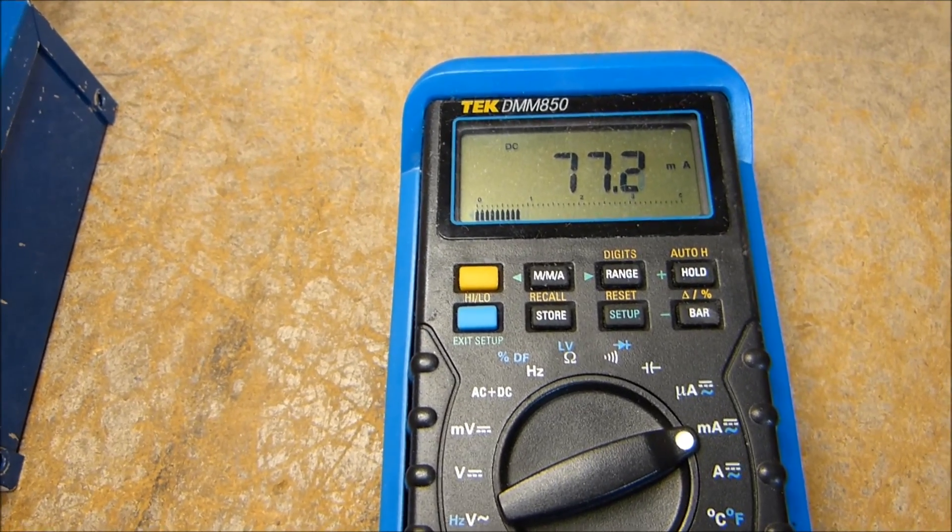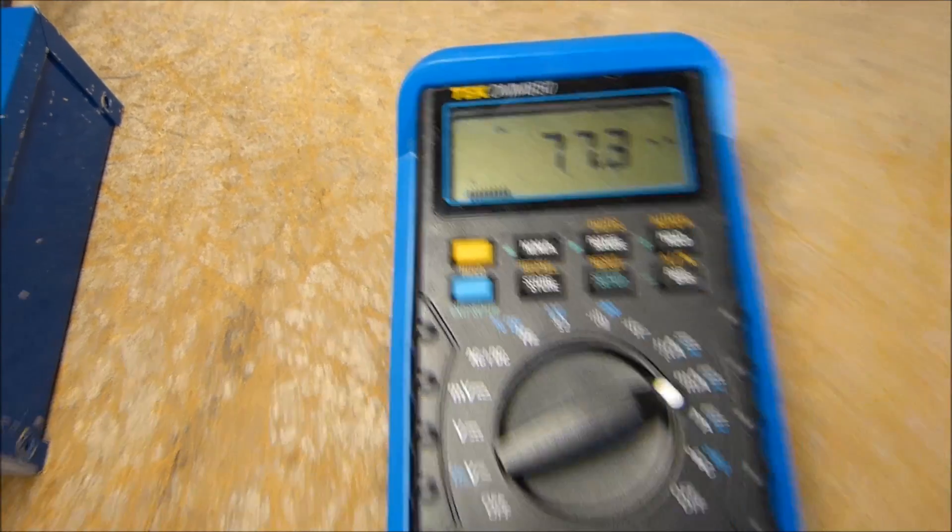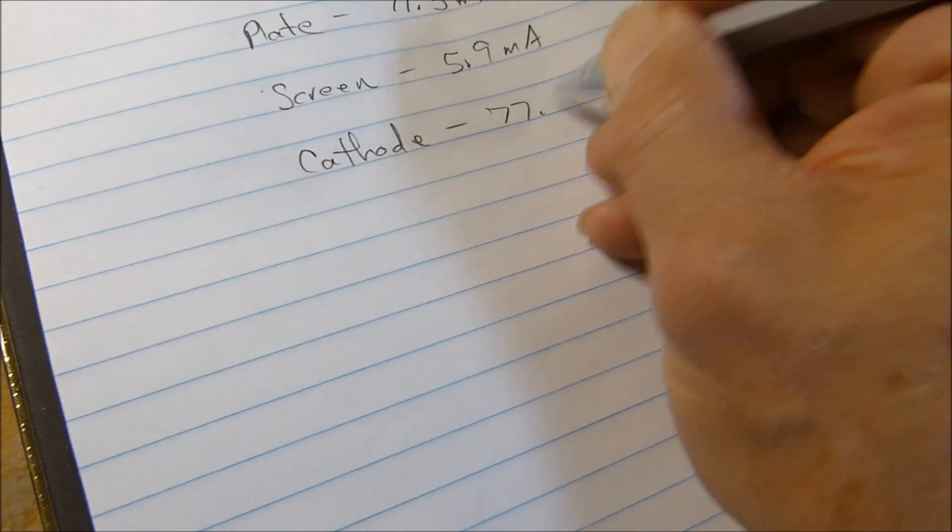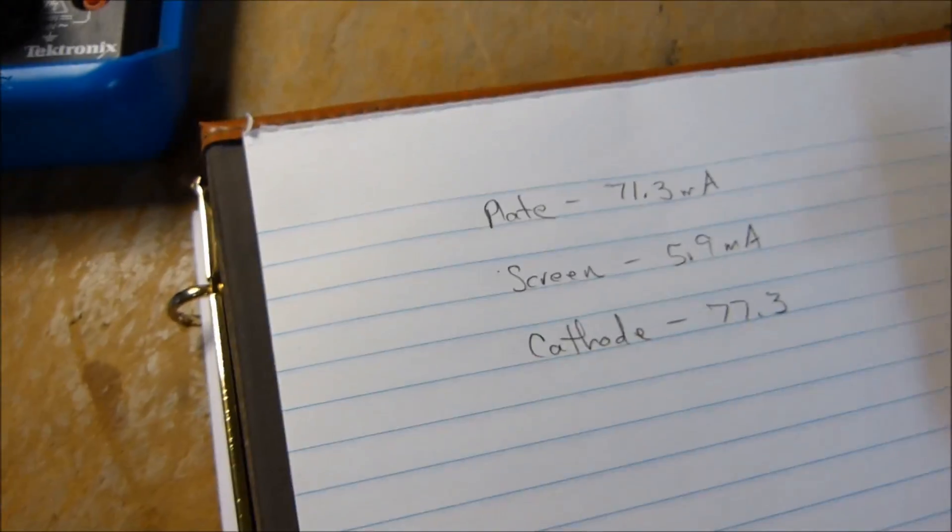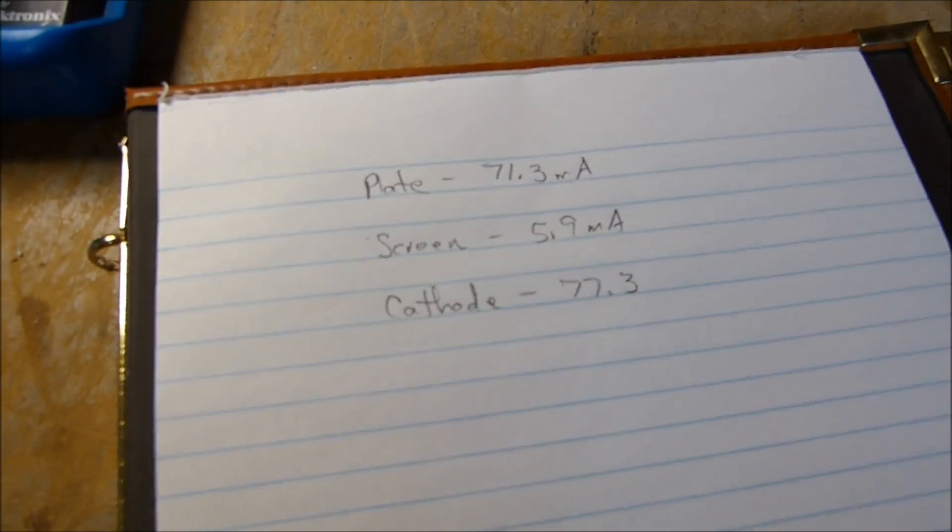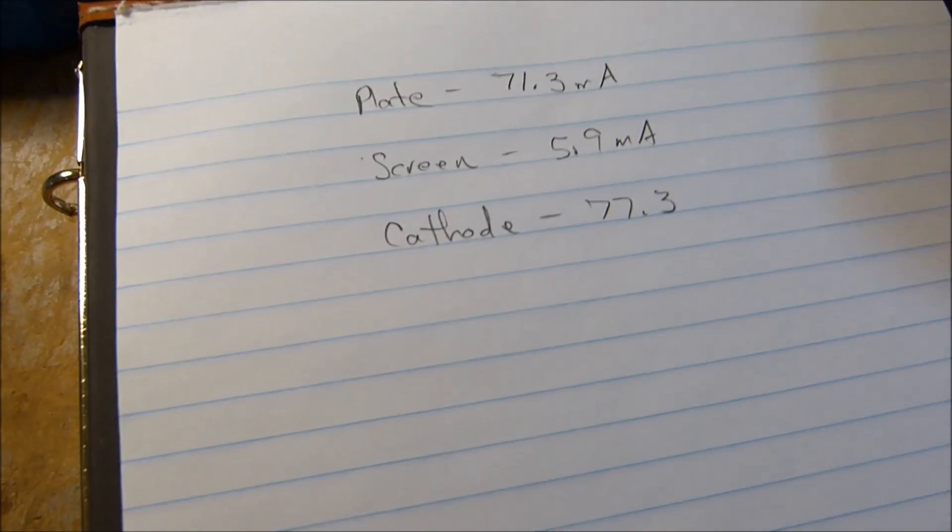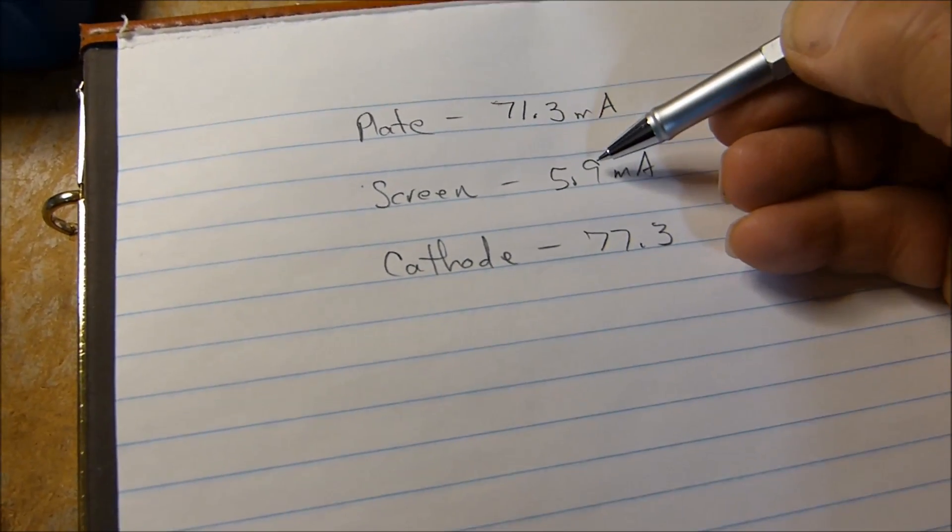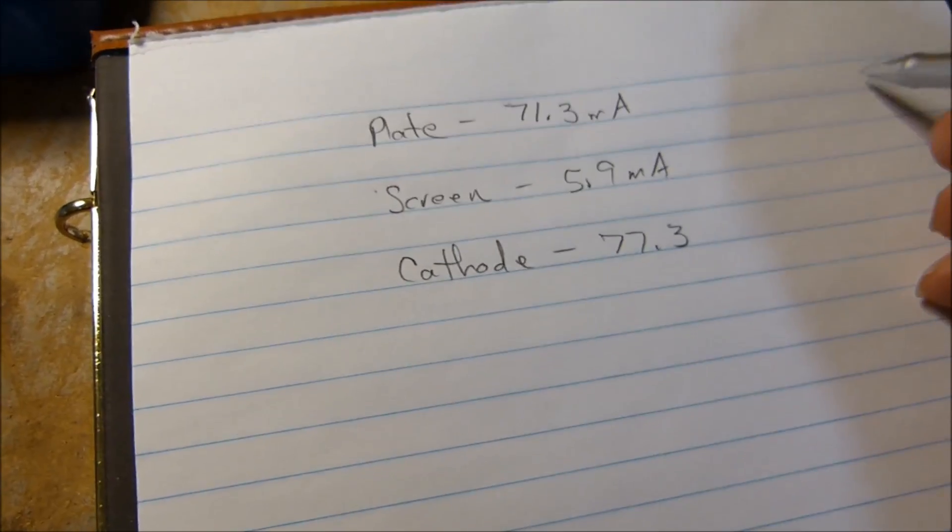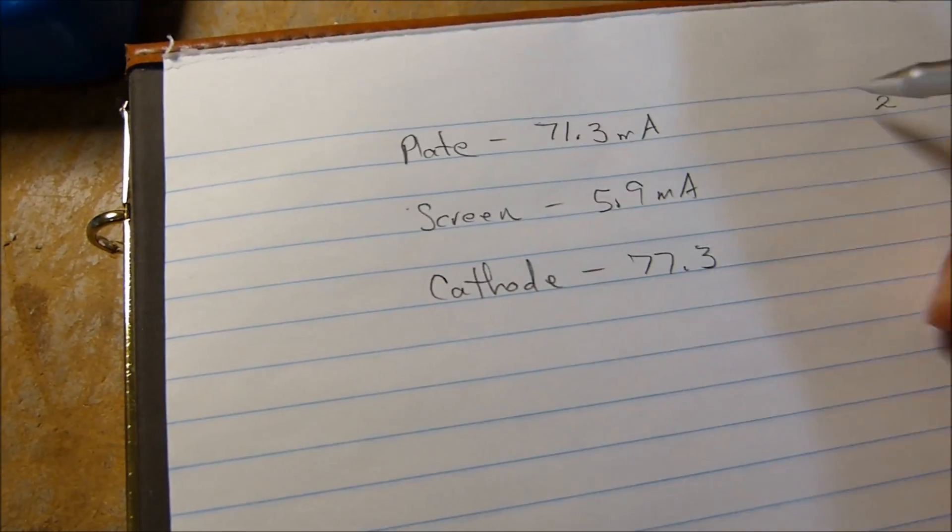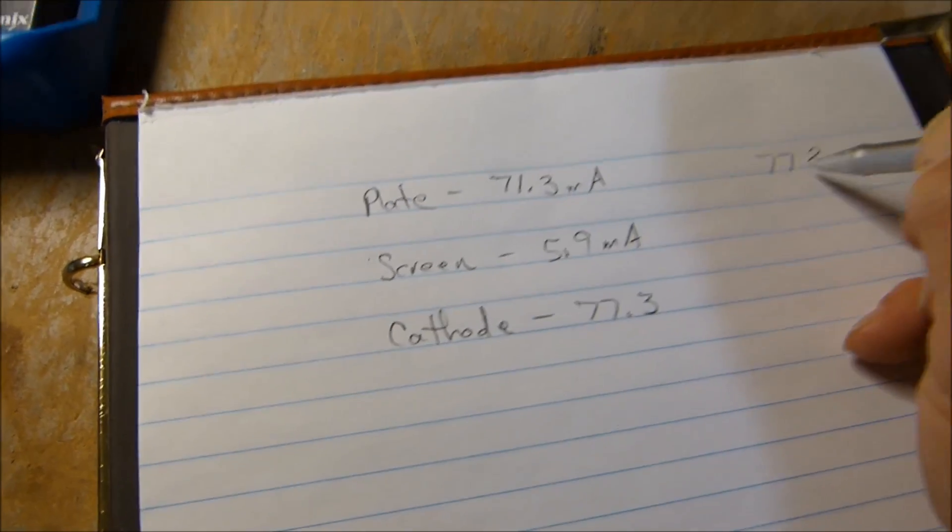Call that 77.3. Now we all know that the cathode current is the sum of these two, right? Well, it's not exactly, it's close. If you add these together, let's see what we're going to get in this case.